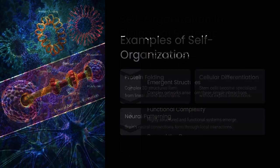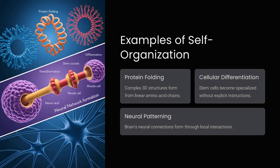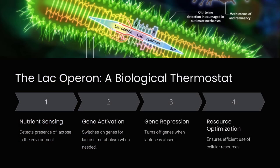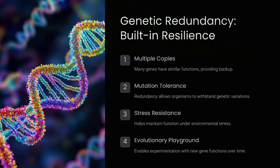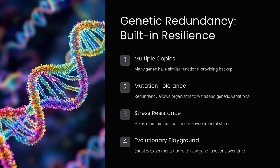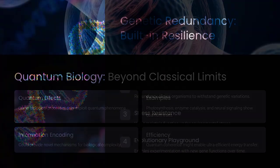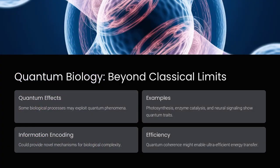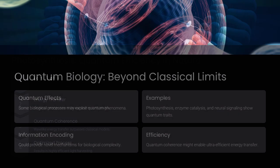The human genome contains about 3 billion base pairs, but the number of different proteins, cell types, and interactions it supports is exponentially greater. Where does all this additional information come from?